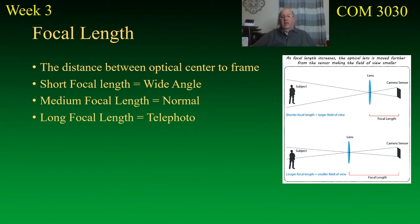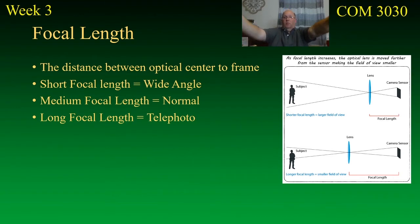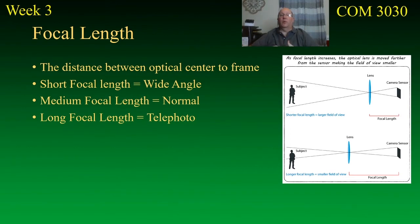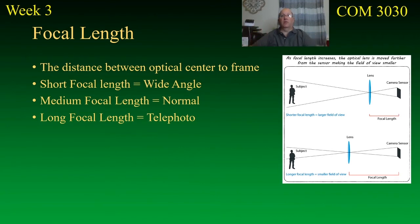A telephoto lens is a long lens that does the opposite — it pushes the lens element further away from the sensor and narrows the viewpoint. If you contract your viewpoint and only look at something directly in front of you, what you're doing is magnifying it — excluding everything else. It makes things look closer than they really are, giving you the effect of a telescope.